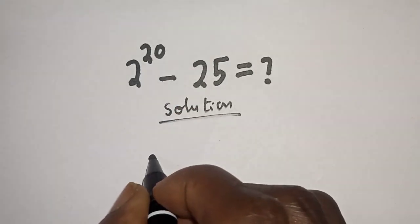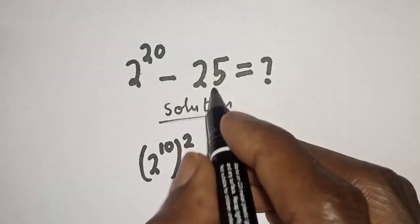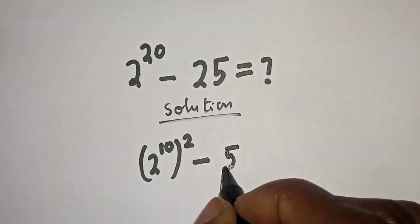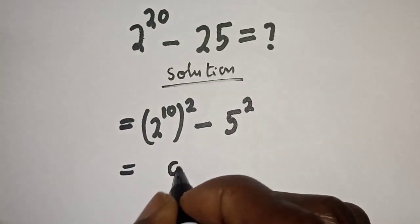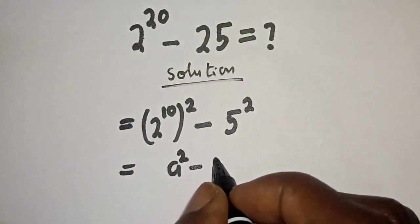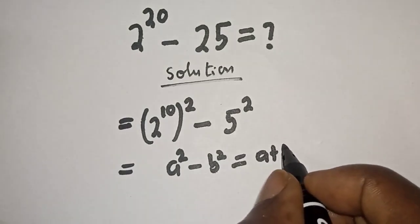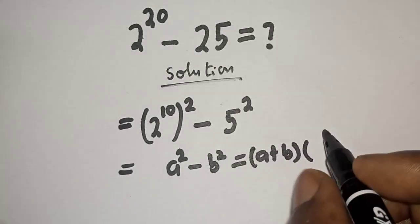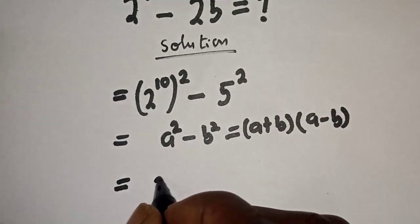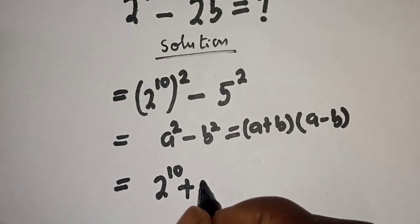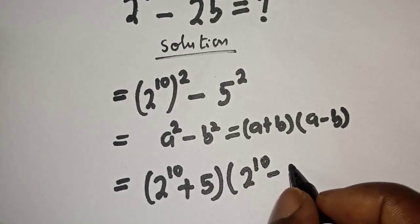2 raised to power 20 can be written as 2 raised to power 10, raised to power 2, minus 25 can be written as 5 squared. Take note of this rule: if you have a raised to power 2 minus b raised to power 2, this is equal to a plus b, bracket, a minus b.